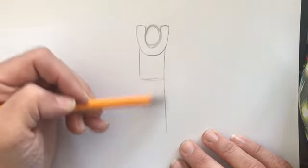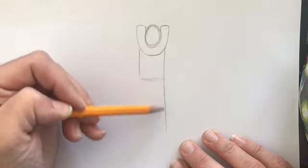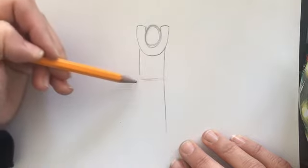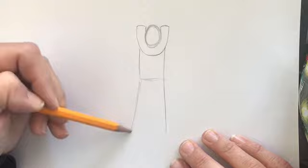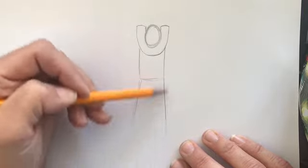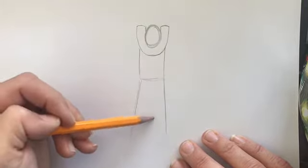Then go over to this side and do another line slightly angled. This is gonna be your legs. Then I want you to do an upside down letter V in the middle. This is your legs.